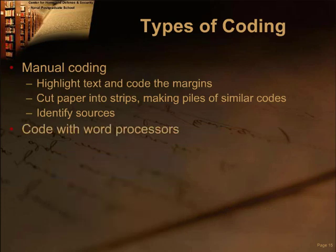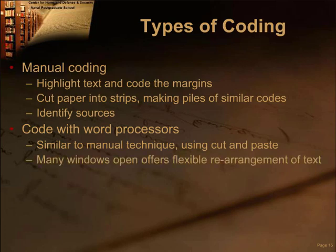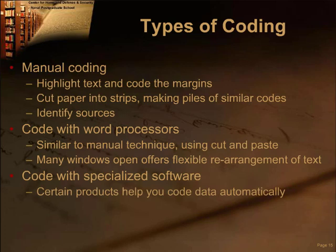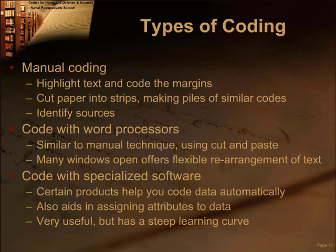If you choose to use word processing to code, you'll use a process similar to the manual approach, but each coded text can be cut and pasted into separate windows. Using the Windows function, you can open several windows simultaneously and paste text into the appropriate window. Specialized software is also available for managing qualitative data. While the researcher is always the one who must identify the codes, qualitative software works well for managing large sets of data. Products like QSR NVivo allow you to code the data; coded data is automatically tagged to the source and dumped into a file. The researcher can also assign attributes such as gender, occupation, and age to each coded excerpt. While the software provides a more sophisticated approach to coding, there is a rather steep learning curve — count on investing a few hours to learn the most basic functions.